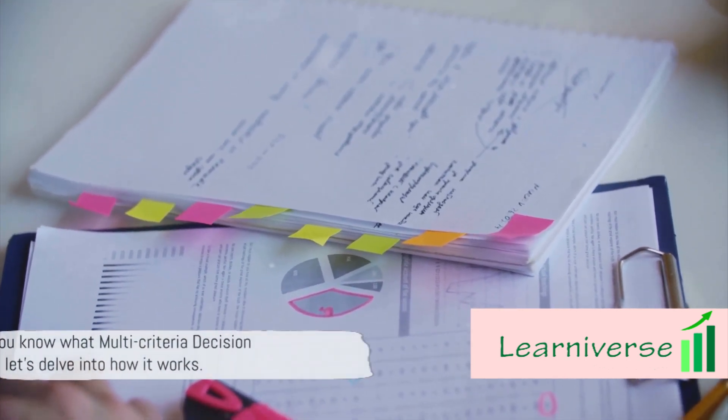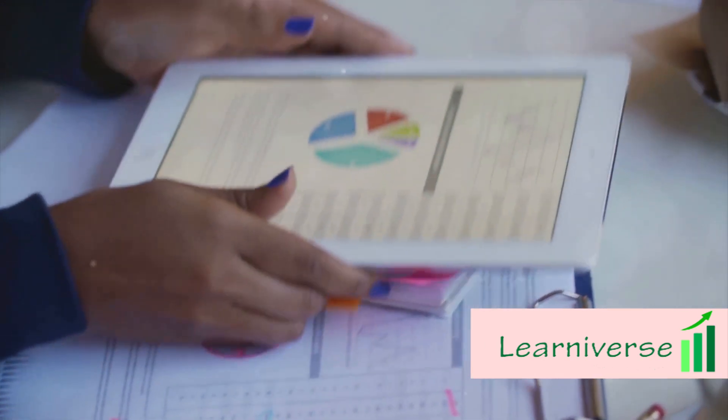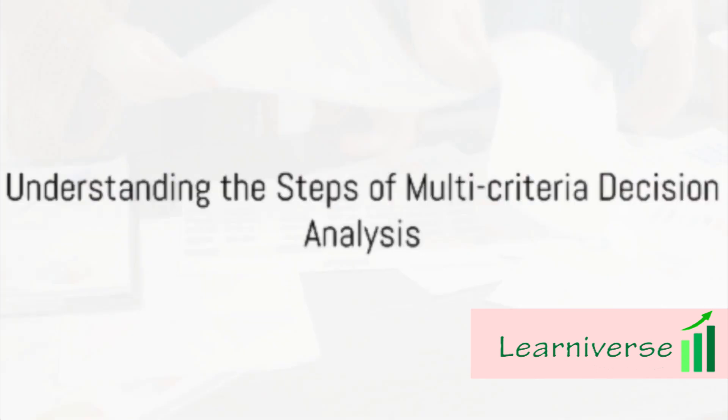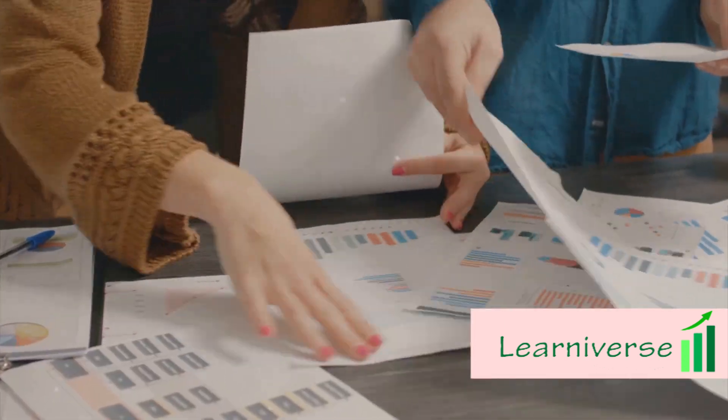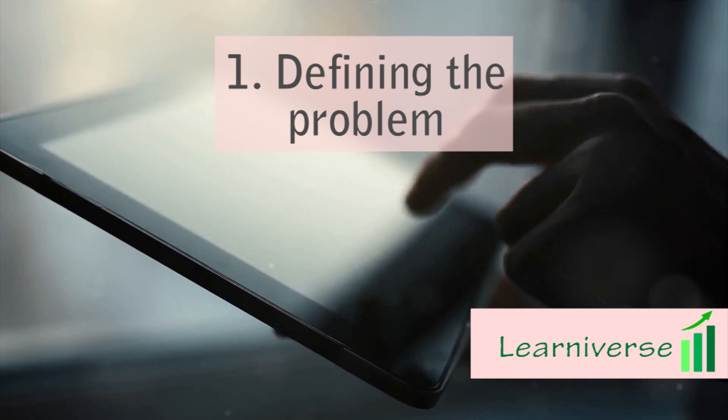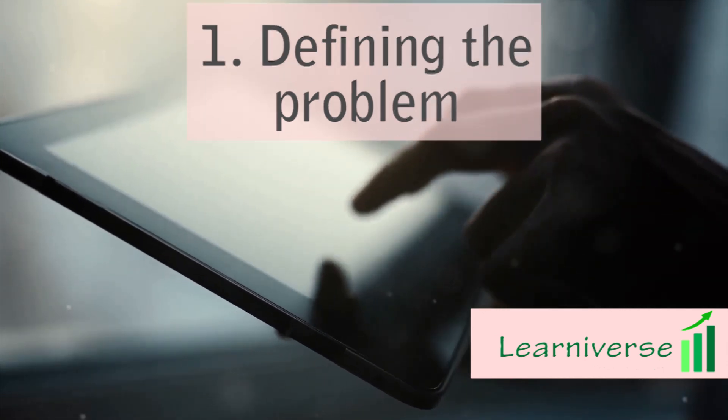Now that you know what multi-criteria decision analysis is, let's delve into how it works. Let's break down the steps involved. First, we start with defining the problem. This is where we identify what decision needs to be made, and why.